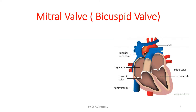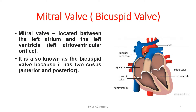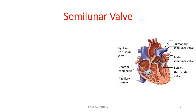The mitral valve, or bicuspid valve, is located between the left atrium and the left ventricle at the left atrioventricular orifice. It is also known as the bicuspid valve because it has two cusps — an anterior and a posterior. Like the tricuspid valve, the base of each cusp is secured to a fibrous ring that surrounds the orifice.